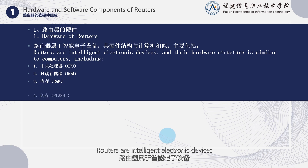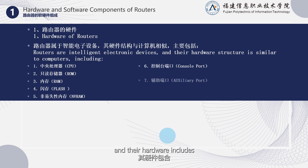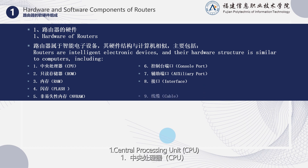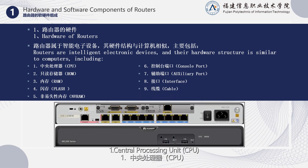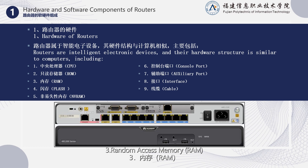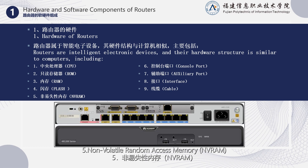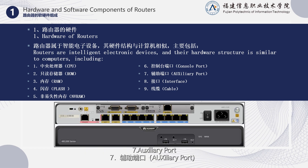Routers are intelligent electronic devices, and their hardware includes: 1. Central Processing Unit (CPU), 2. Read-Only Memory (ROM), 3. Random Access Memory (RAM), 4. Flash Memory (Flash), 5. Non-Volatile Random Access Memory (NVRAM), 6. Console Port, 7. Auxiliary Port, 8. Interfaces, and 9. Cables.